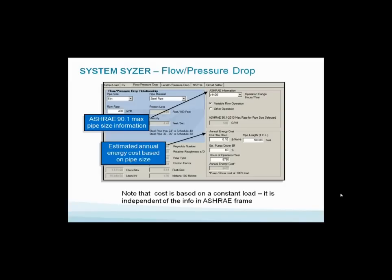You will find this Windows-based version of the system sizer includes this in the pipe sizing. When you go to flow and pressure drop, you have a right-hand column that says ASHRAE information. You've got to plug in how many hours a year you think you're going to run your pump and pick whether it's variable flow or other operation. Once you've done that, it will not allow you to pick a pipe too small per ASHRAE 90.1 2010. This will make you meeting the ASHRAE codes easier, very easily done.